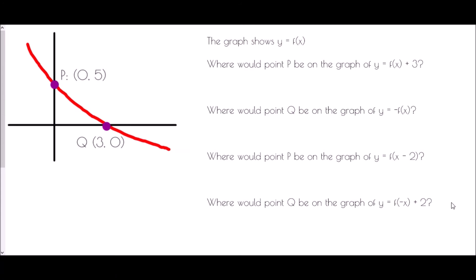Finally, we're going to look at a graph of y equals f of x. We don't know the exact equation, but we know there are two key points: point P at (0, 5) and point Q at (3, 0). We're going to work out what those points would be after a transformation. The first question asks where would point P be on the graph of y equals f of x plus 3. This is a translation — because it is after the f of x, it is happening in the y direction, moving up three spaces. So P would move up three places to (0, 8).